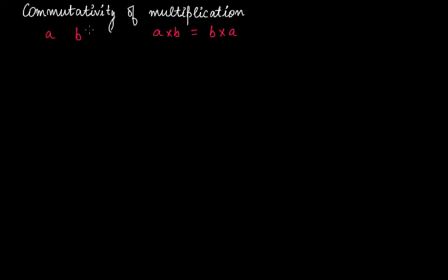Then we will say that the multiplication of two integers is commutative — they follow the commutativity of multiplication. The condition is that a times b should be equal to b times a. Let's take an example with two numbers.